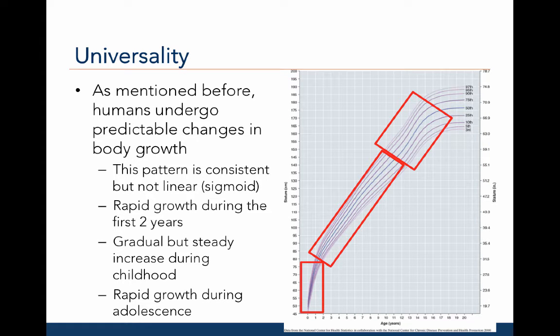Similar to prenatal growth, all humans undergo a predictable change in body growth and overall development. This pattern is consistent, but it is not linear. Rather, it's S-shaped. There is a period of rapid growth during the first two years. Then there's a gradual but steady increase in growth during childhood, and then there's again a rapid growth during adolescence.